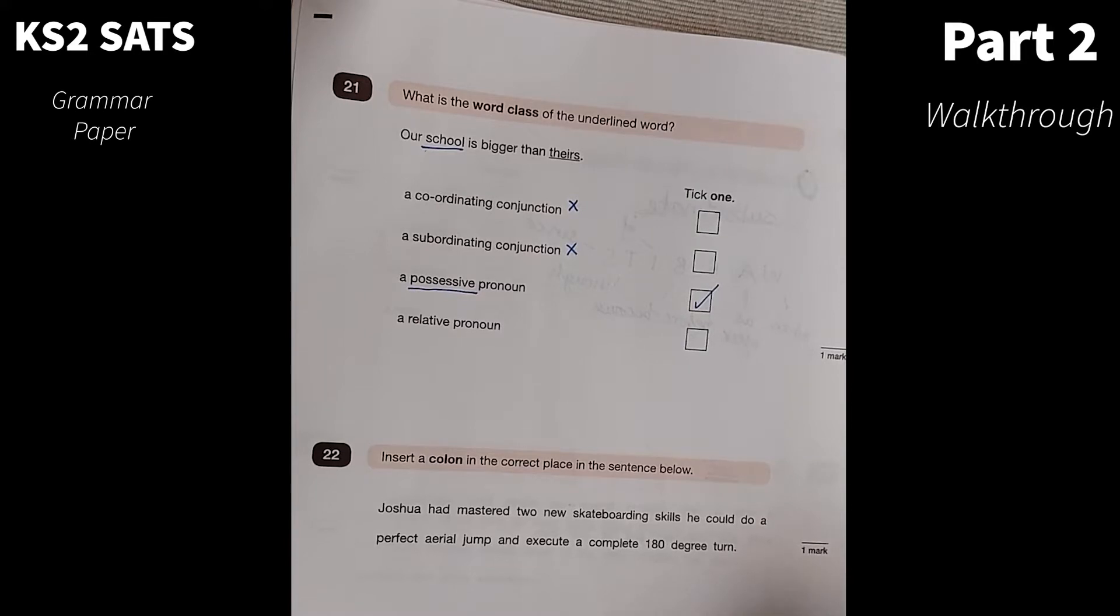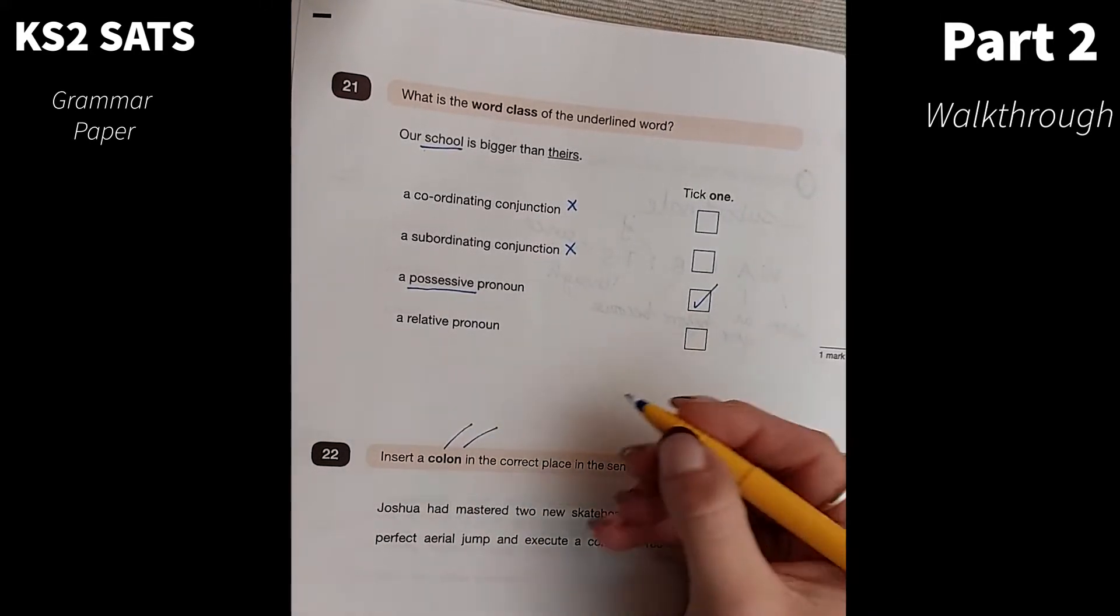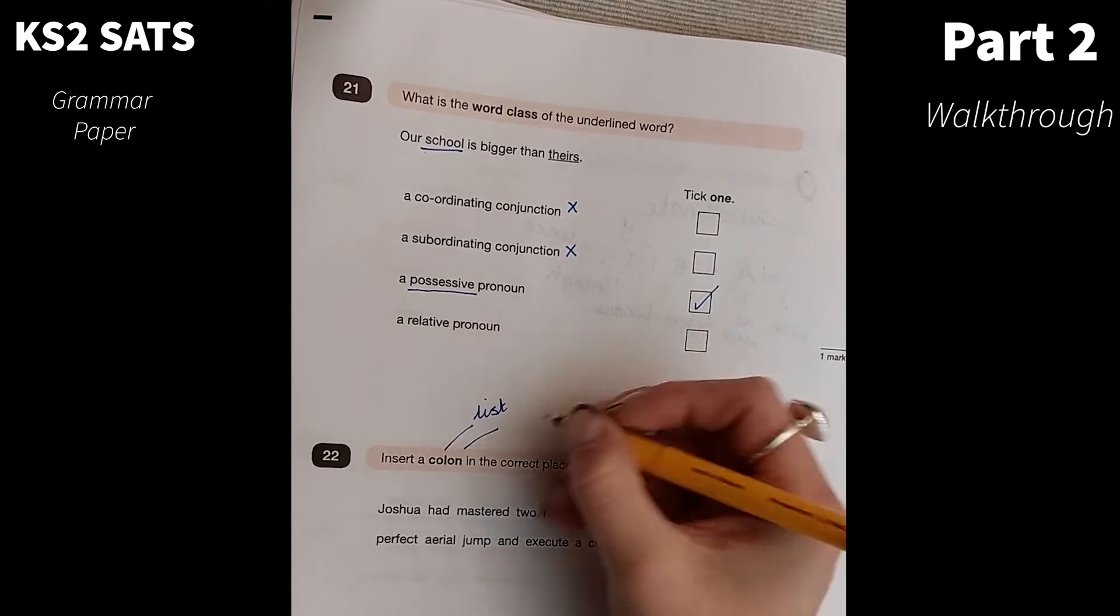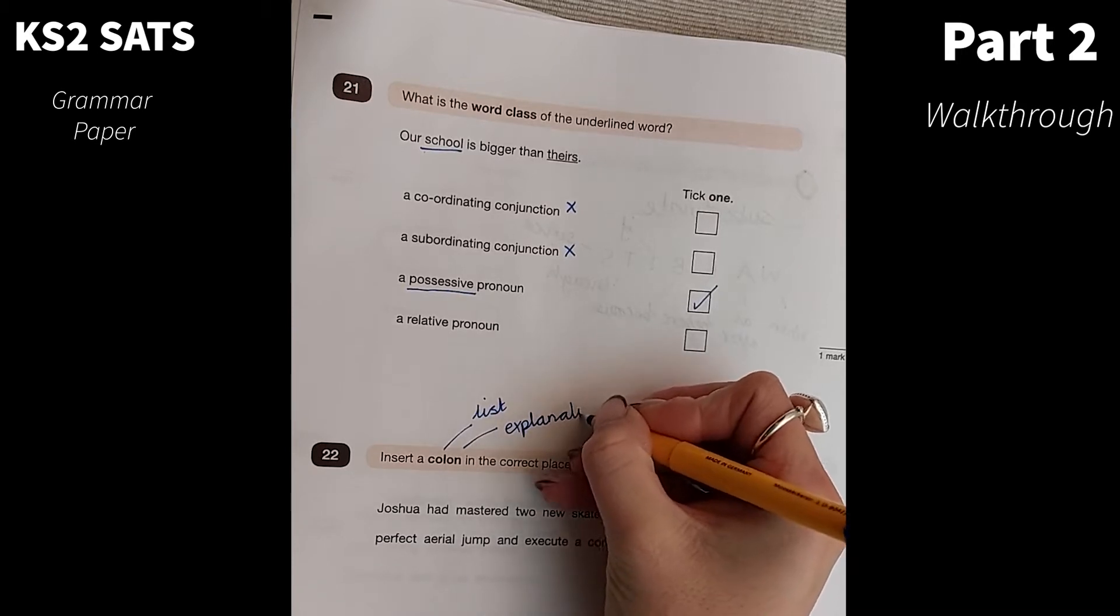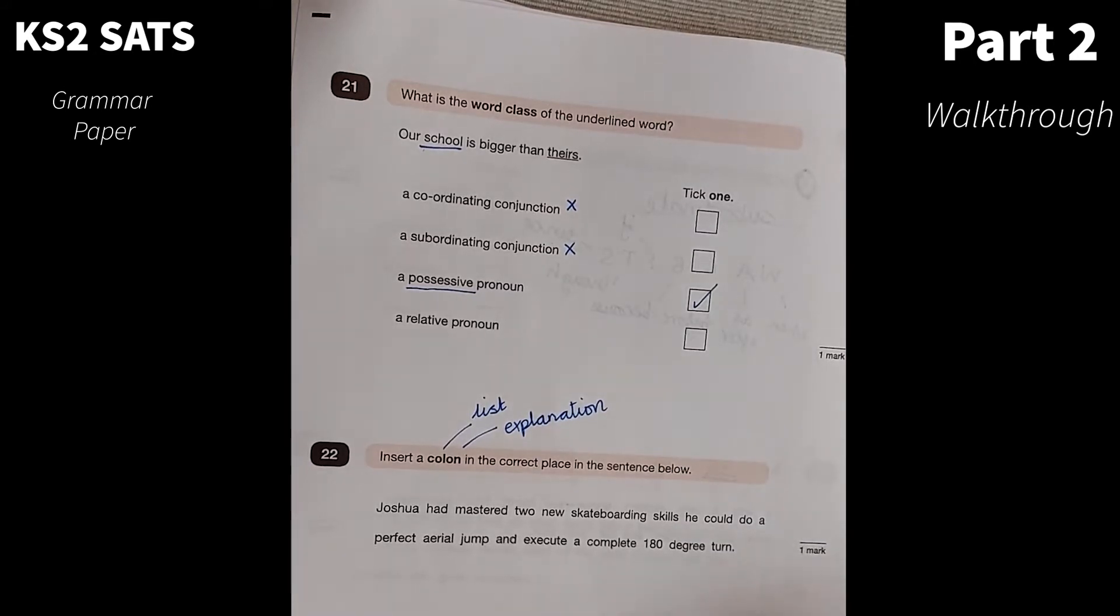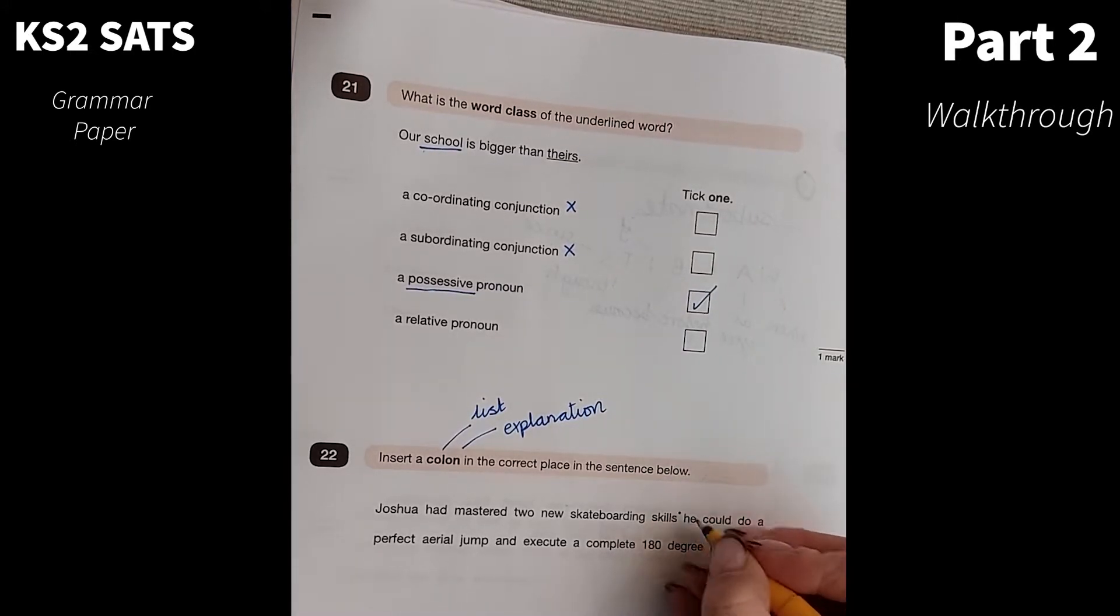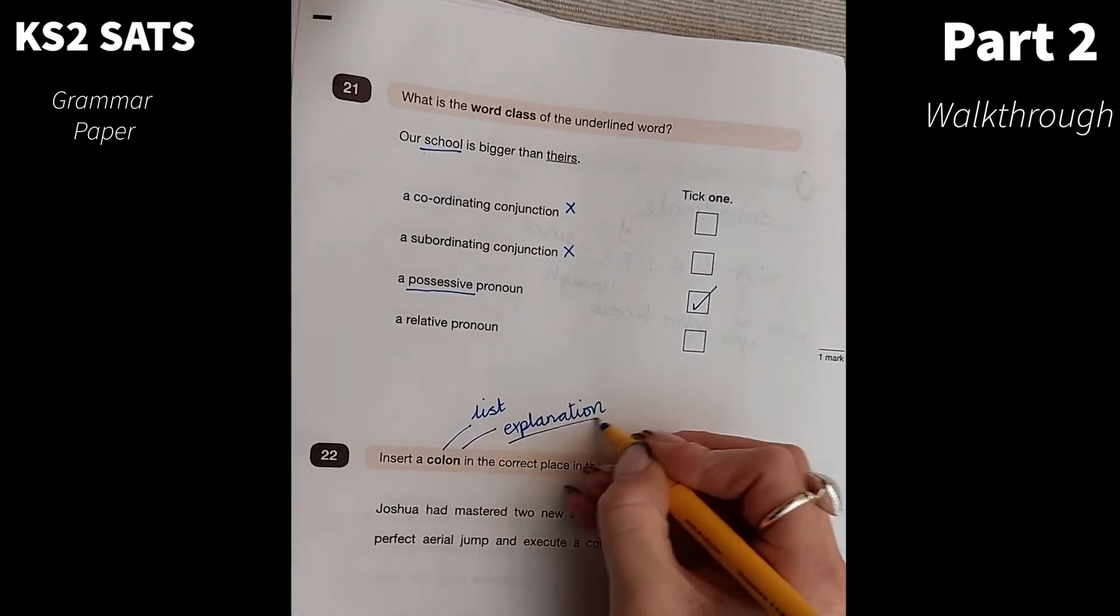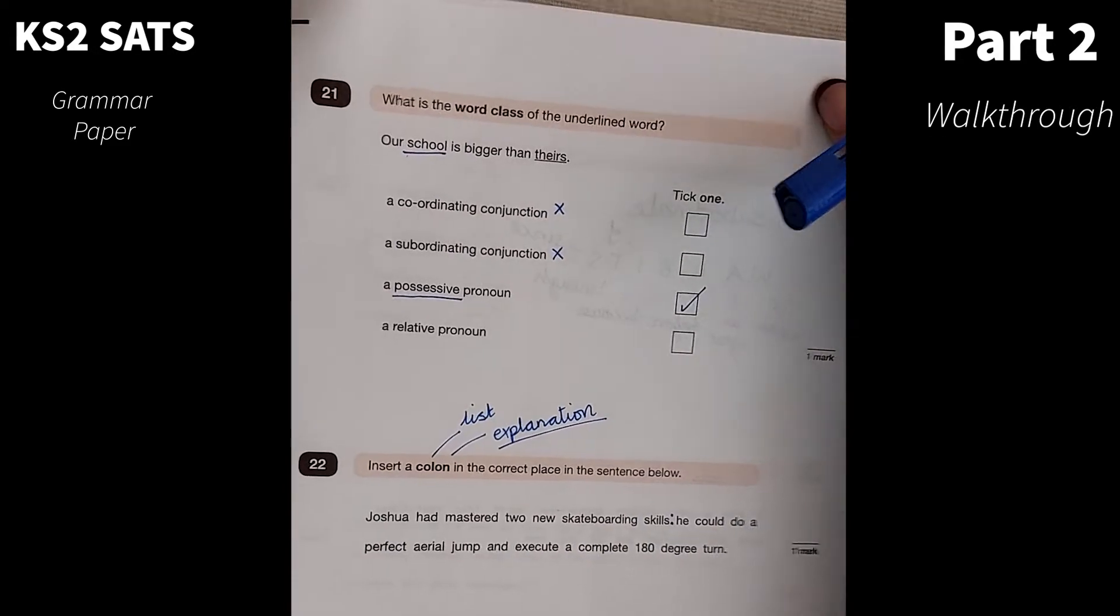Number 22. Insert a colon in the correct place in the sentence below. If I think of my two uses of colons, I can use a colon to list and I can use my colon for an explanation. Joshua had mastered two new skateboarding skills. He could do a perfect aerial jump and execute a complete 180 degree turn. For here, my colon is going to go here just before skills and this has been used for an explanation. I'm explaining the two new skills that Joshua has learnt.